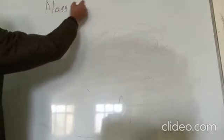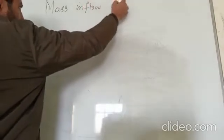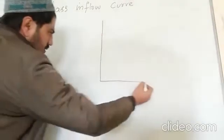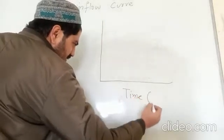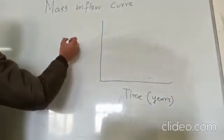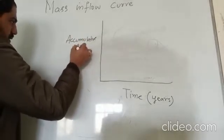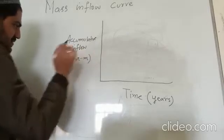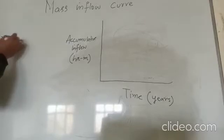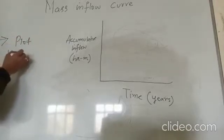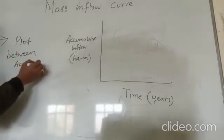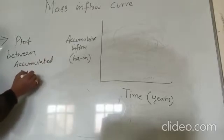Today's lecture is about the mass inflow curve. A mass inflow curve is simply a plot between time, which is usually taken in years on the x-axis, and accumulated or cumulative inflow on the y-axis, mostly in hectare meters. So, a mass inflow curve is a plot between accumulated inflow and time.